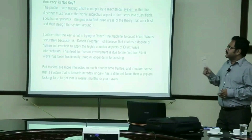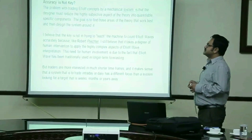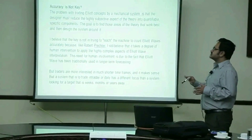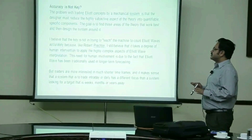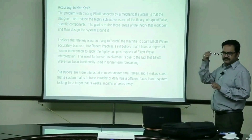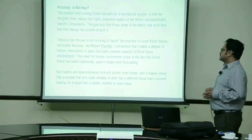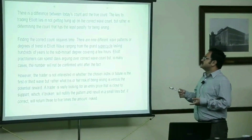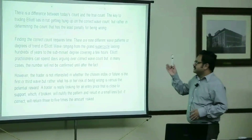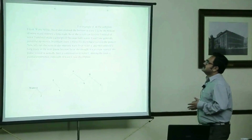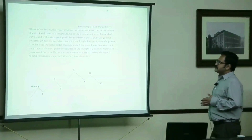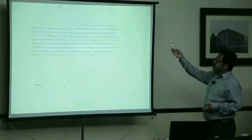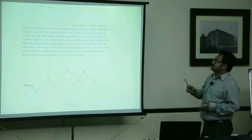Accuracy is not the key. The problem with trading Elliott Wave by mechanical system is that the designer must reduce the highly subjective aspect of the theory to quantify those specific components. The goal is to find the areas of the theory that work best and design the system around it. I believe the key is not trying to teach the machine to count Elliott Wave, because Elliott Wave always needs some human intervention. The key to trading Elliott lies not in getting hung up in the correct wave count. For example, if the complete Elliott Wave is below, even if the trader mistakes the bottom of wave 2 for the bottom of wave 4, they can still catch wave 3 instead of wave 5 and still make a good profit, because both waves 3 and 5 are in the direction of the trend.